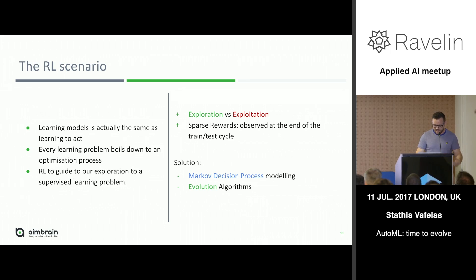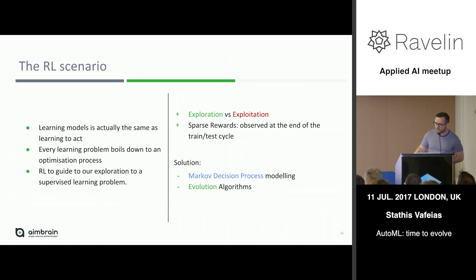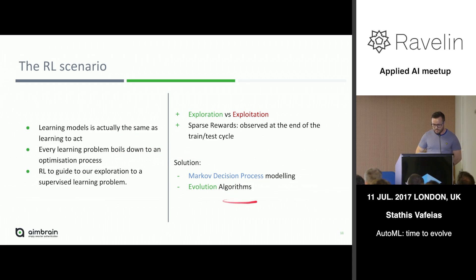We haven't solved RL yet — it's an open problem. Two common solutions to RL-type problems: one is modelling Markov decision processes, which is a huge literature I won't be able to cover here. The other way to solve this RL problem is through evolutionary algorithms.